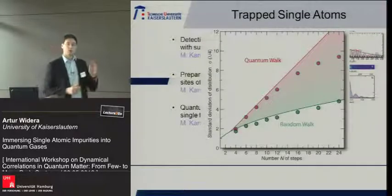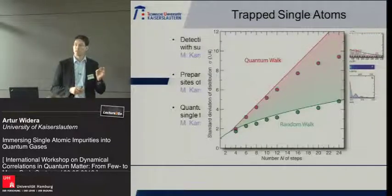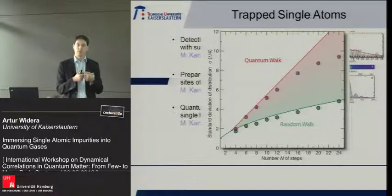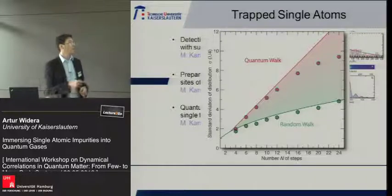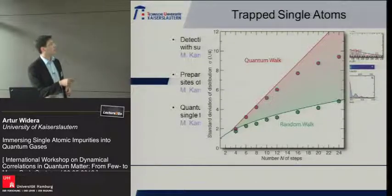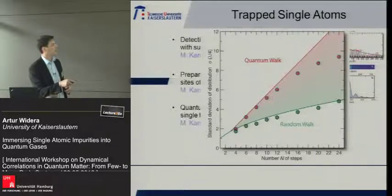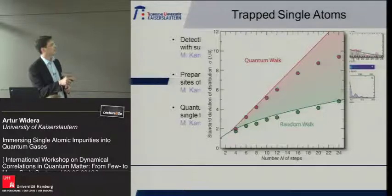We can also control quantum degrees of freedom. We entangled the internal degree of freedom — the spin state — with the atom's position, preparing coherent superpositions of an atom being to the left and to the right. We were able to realize the so-called quantum walk, which shows ballistic transport rather than diffusive transport as in the classical random walk. We followed the evolution from quantum behavior and observed the quantum-to-classical transition.